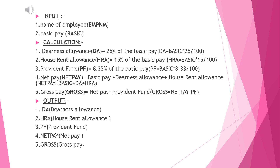Similarly, we calculate house rent allowances, named HRA. Provident fund is named PF. Net pay is named 'netpay'. To calculate net pay, after calculating DA and HRA, we add basic, DA, and HRA. For gross pay, named 'gross', we calculate net pay minus provident fund. The output to display will be DA, HRA, provident fund, net pay, and gross pay.